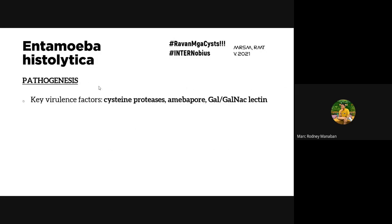Virulence factors of Entamoeba histolytica include: cysteine proteases — enzymes that degrade proteins, allowing the amoeba to spread to other areas by degrading mucosal lining proteins and hemoglobin to obtain iron. Virulence factors are characteristics, secretions, or morphological features of an organism that facilitate the spread, intensity, or severity of infection.